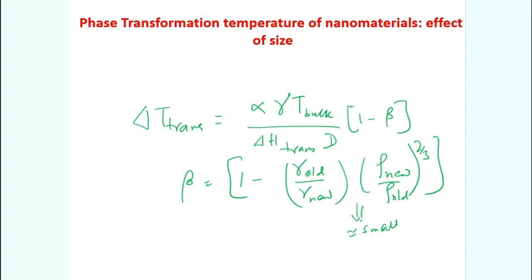This equation allows you to calculate the change of transformation temperature — like melting temperature or any eutectic transformation temperature — straightforwardly if you know the values. ΔH(trans) is available from literature and the bulk transition temperature is also known. The only unknown is typically the γ values; density values may be known but surface energies are not available for many systems. In that case, simply use β = 0.